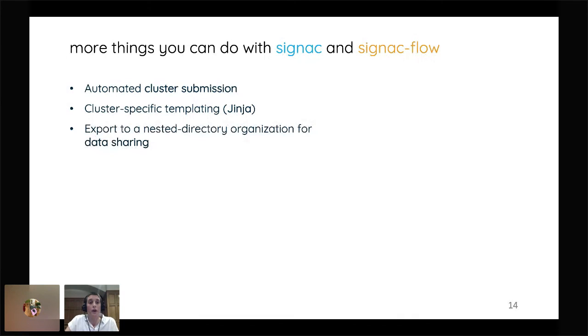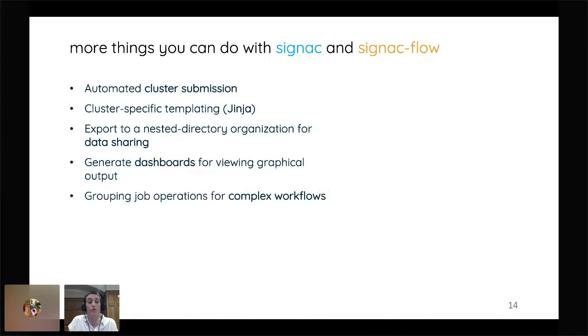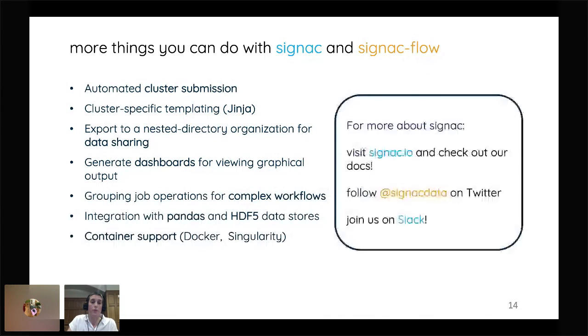It's good for exporting for data sharing. So if you have a collaborator that doesn't use SIGNAC or if you want to archive something you can export to that nested directory structure and you can convert back from nested directory structure to SIGNAC. And we also have a SIGNAC dashboard, which I'm just plugging here, but I encourage you to look at it on our website, which is the third in the SIGNAC, SIGNAC flow, SIGNAC dashboard, which allows you to view graphical output in a very interactive way. We also have some new features like groups, which allows you to group those operation functions to more complex workflows and more complex submissions. We integrate with pandas and HDF5 data stores. And we have container support with Docker and Singularity.